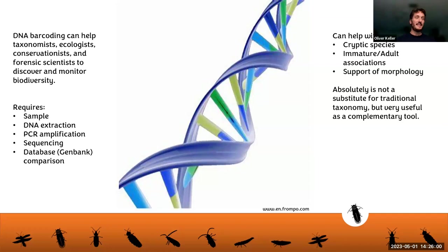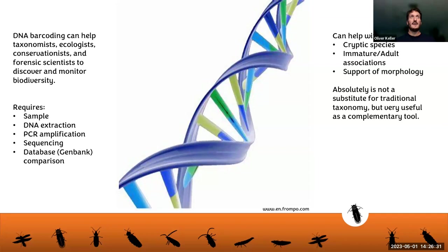Barcoding can help with cryptic species — for example, sequencing CO1 to figure out how many distinct Photuris species are in a region. You can also use this for both immatures and adults: sequence the larva and the adult, and if they match at 99% or more, you have the same species. It is a support for morphology, but I have a hard time saying you should use it by itself — you should always try to confirm with morphology. It's not a substitute for traditional taxonomy, but a very useful and complementary tool. Gavin Martin's phylogeny was based on hundreds of genes, not just one, so much more information went into that classification.